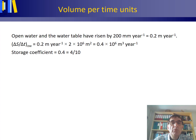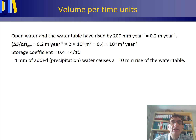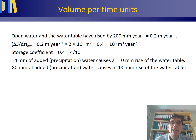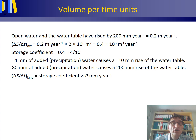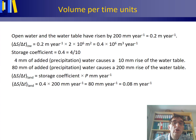For the land part it's slightly more difficult. We need to take a look at the storage coefficient of 0.4, or 4 divided by 10. What does this mean? If we were to have 4 mm of added precipitation water, this would cause a 10 mm rise of the water table. If we have a 200 mm rise of the water table — the same as your open water level — multiply by 20: 80 mm of added precipitation water causes a 200 mm rise. So the change in storage for the land part equals the storage coefficient times the rise: 0.4 times 200 mm per year gives 80 mm per year, or 0.08 meter per year as delta S / delta T for the land part.